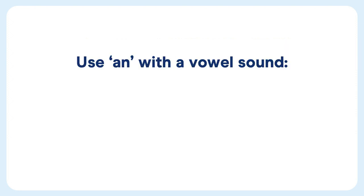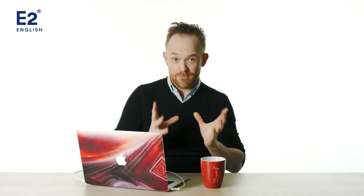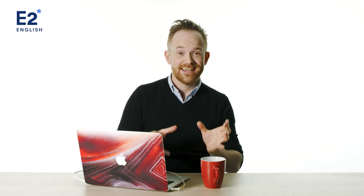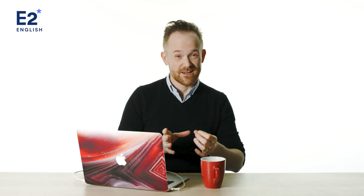We use 'an' with a vowel sound. That's easier for words like 'an umbrella.' But with vowel sounds, when the letter is a consonant, we still have to use 'an' — like 'an hour,' 'an honest man,' or 'an honor.' Some of you probably noticed that the H is there and that H is a consonant. Sometimes the H consonant sounds like a vowel at the beginning of a word. It's just something we have to get used to.